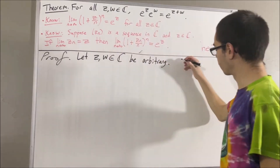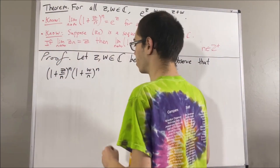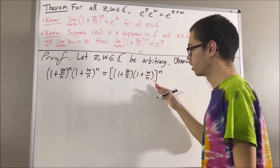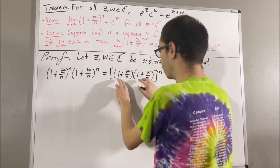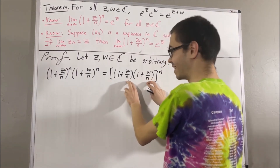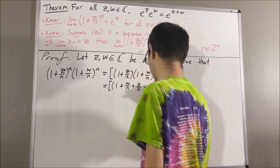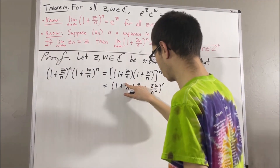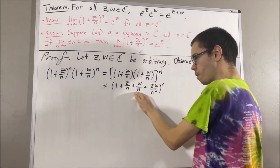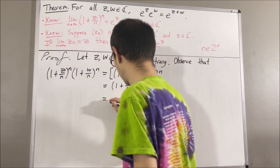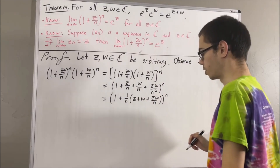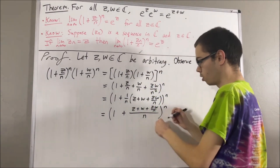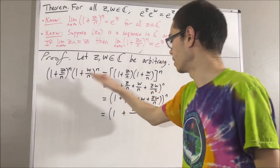And we observe the following. By properties of exponents, we know that this expression is equal to (1 plus z over n) to the n times (1 plus w over n) to the n. If we expand out the inside, we get 1 plus w over n plus z over n plus zw over n squared. And from the last three terms, we factor out a 1 over n. So for any positive integer n, this expression is equal to (1 plus (z plus w plus zw over n) over n) to the n.